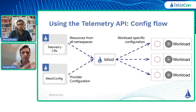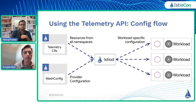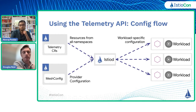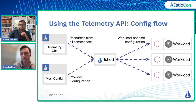To introduce the API, let's talk about how the config flows. It works a lot like other APIs in Istio. We have telemetry resources you can create in namespaces, and those are combined with some provider configuration. Istio then figures out the right configuration to send each workload's proxy, and we generate the telemetry as instructed.